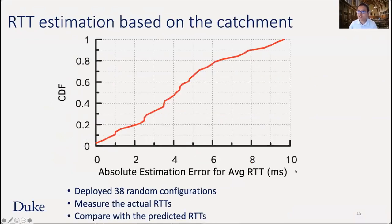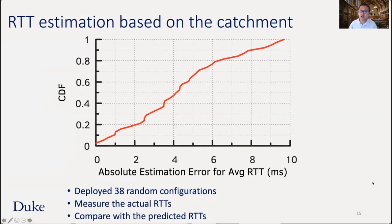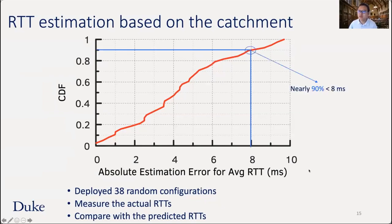After discovering each client's linear order, we can estimate the RTT for a specific Anycast configuration with the predicted catchment. Evaluating 38 random configurations composed of 1 to 14 different sites, we measured actual RTTs and compared them with predicted RTTs according to clients' linear preference orders. Nearly 90% of all estimations have an absolute estimation error of less than 8 milliseconds, demonstrating the accuracy of the approach.